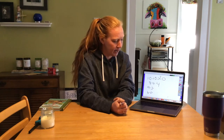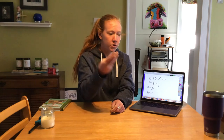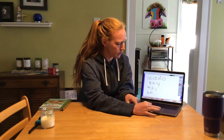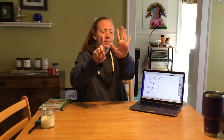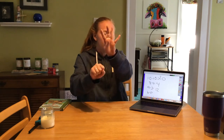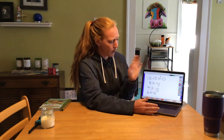Now we have 9 plus 3. So let's say 9, 10, 11, 12. Nine plus three equals 12. Great. And now the last one: 6 minus 2. Minus means it's getting smaller. So if we have 6 minus 1, 2 — equals 4. Great. Nice job with our calendar today.